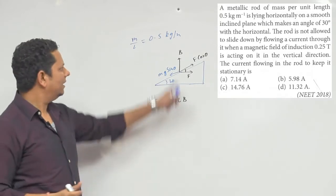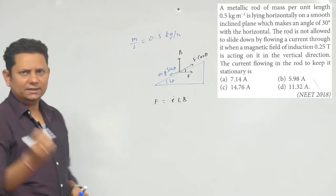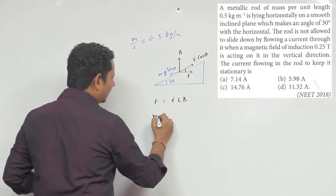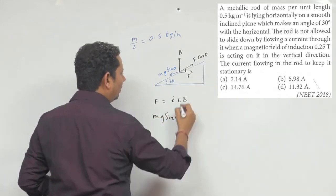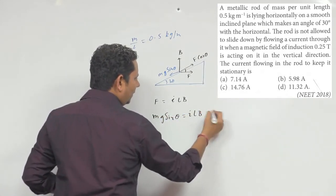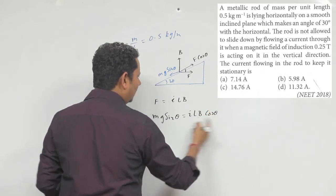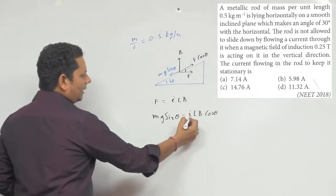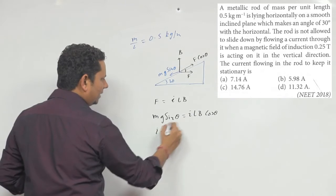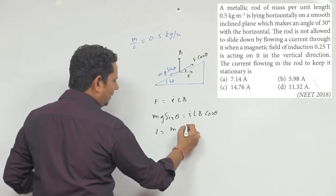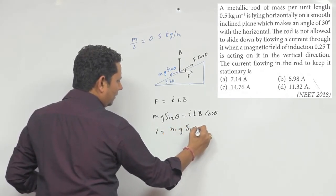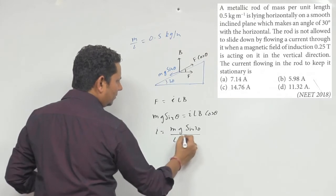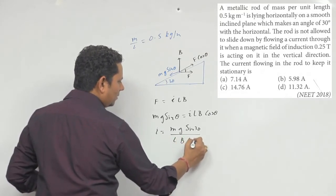If this is the balance of the rod, then the rod will be stationary. This means that Mg sin theta will be equal to F, which is iLB cos theta. Theta value is 30 degrees. I will be equal to Mg sin theta divided by LB cos theta.